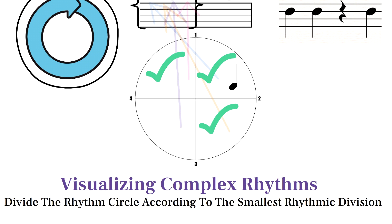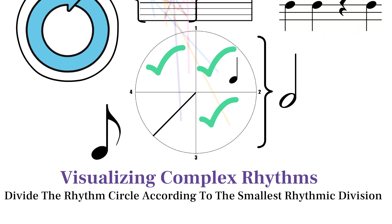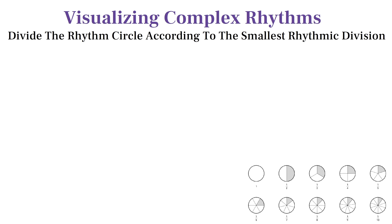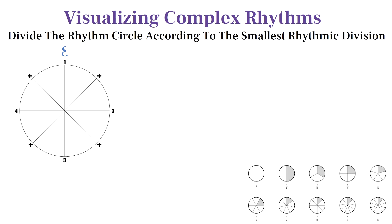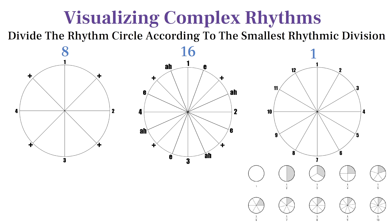Our previous rhythm circle can represent quarter notes and half notes and larger rhythmic divisions, but we couldn't represent eighth notes on it. If the smallest rhythmic division is eighth notes, the circle can be divided into eight pieces, 16 pieces for sixteenth notes, and 12 pieces for something like twelve-eight time.